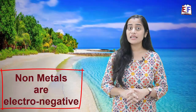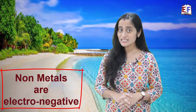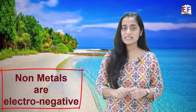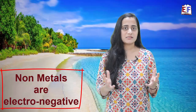What are nonmetals? Nonmetals are substances which are electronegative in nature — that is, they always have a tendency to gain electrons. Let's try to understand what we mean by tendency to gain electrons with an example of a nonmetal.